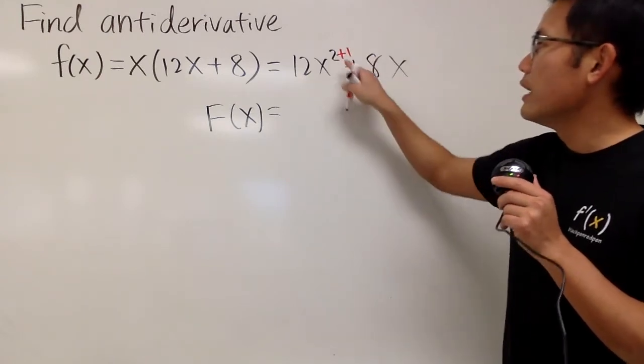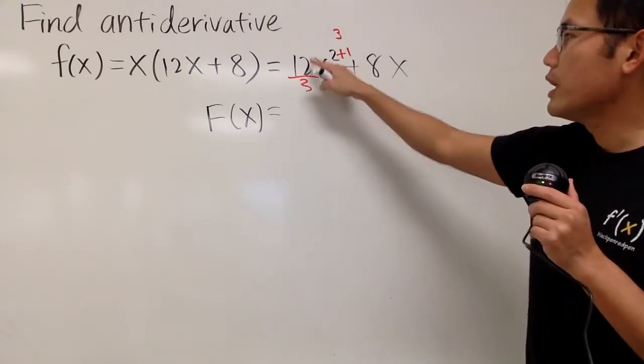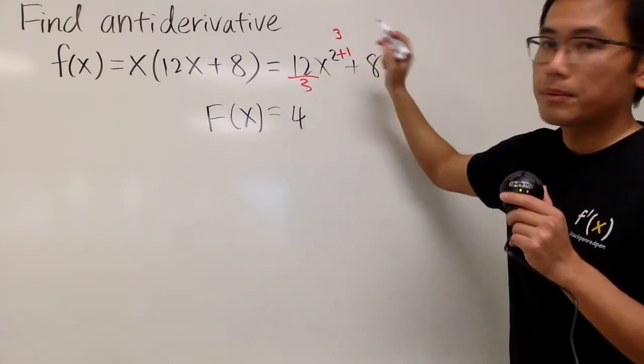add 1 to the power first, and 2 plus 1 is, of course, 3. And divided by the new power, I'll put it down here. So, here we will get 4, and then x to the third power.